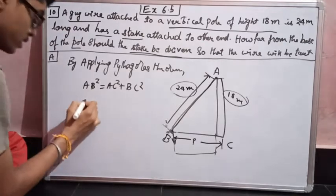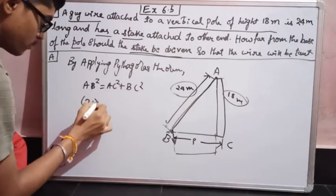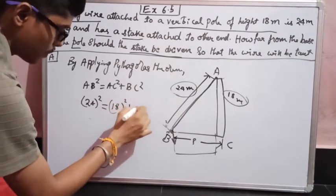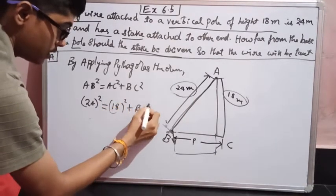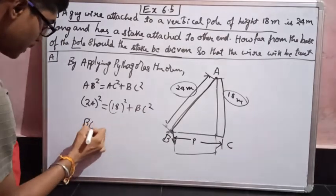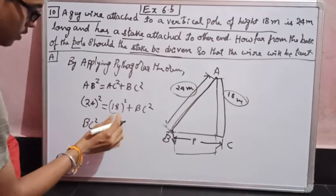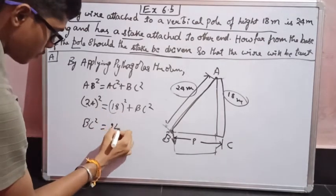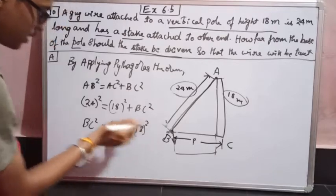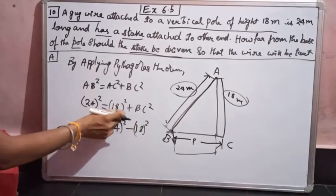I have a value of AB as 24 meters, so 24². That is equal to AC as 18 meters, 18² + BC². I need to find the value of BC. I want BC, so I will keep it on the left hand side. If I shuffle this equation, it will become BC² = 24² - 18².